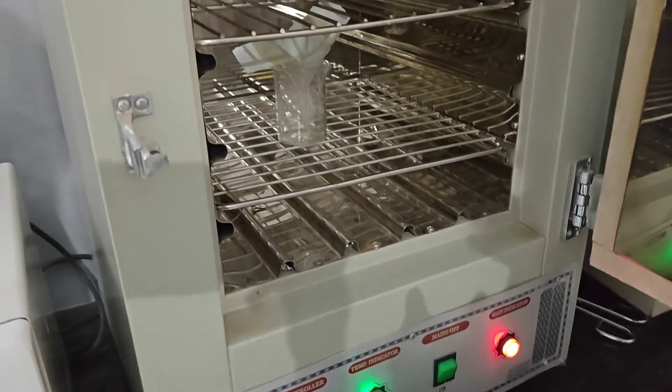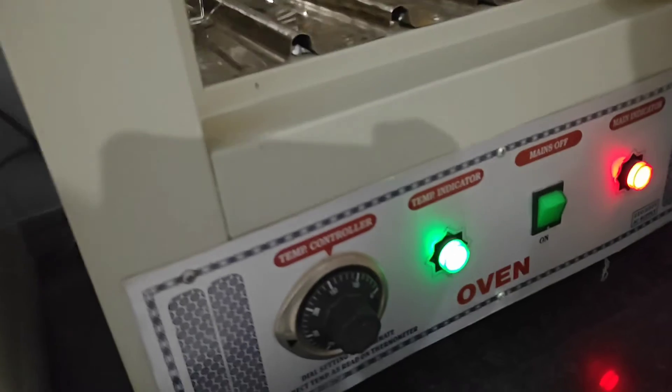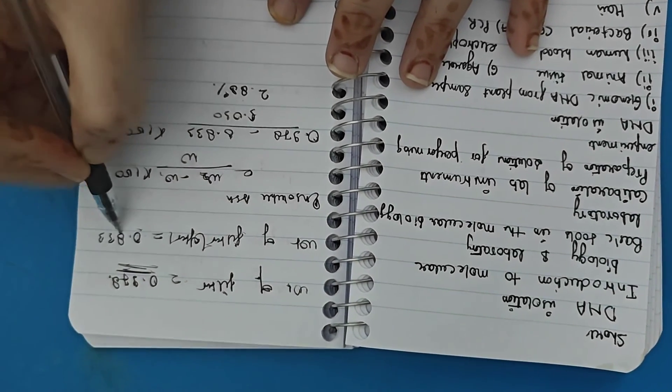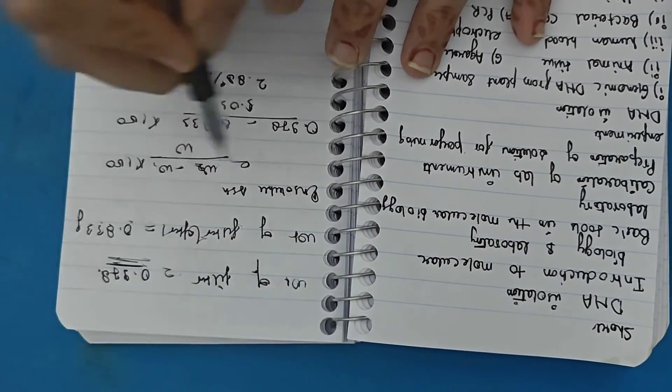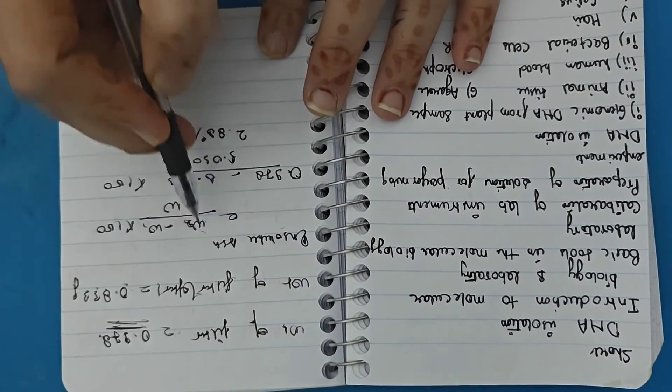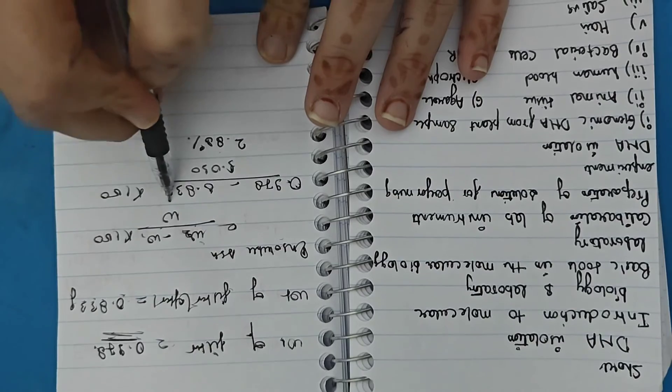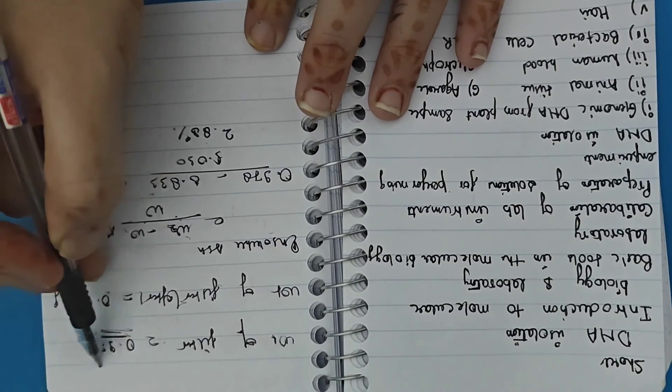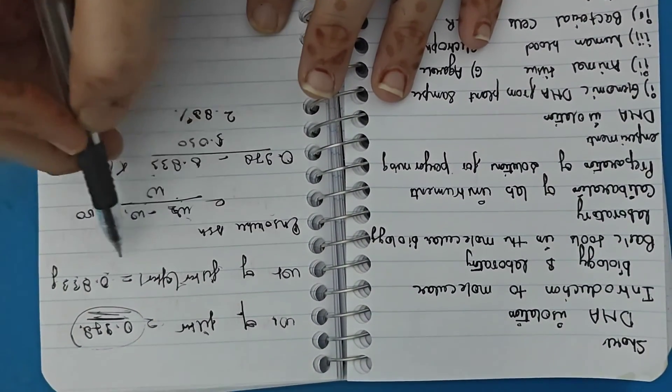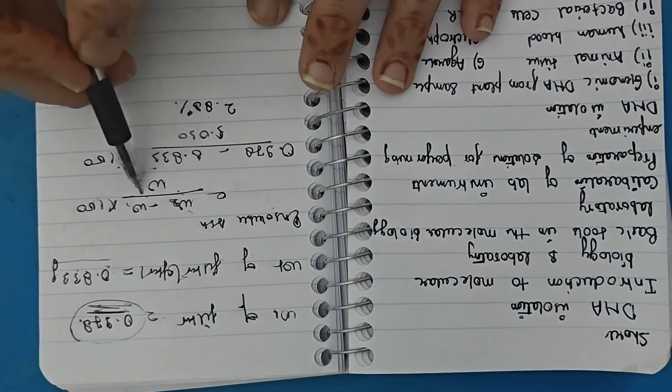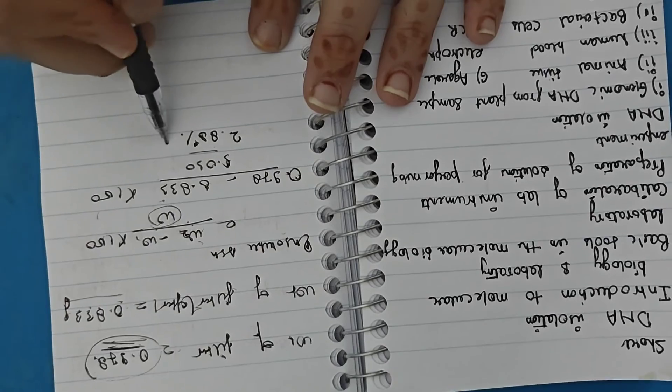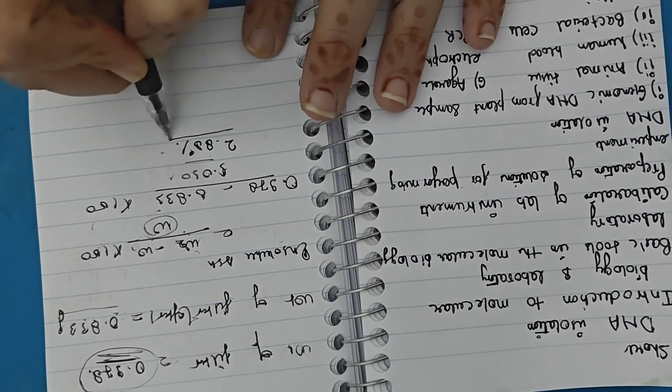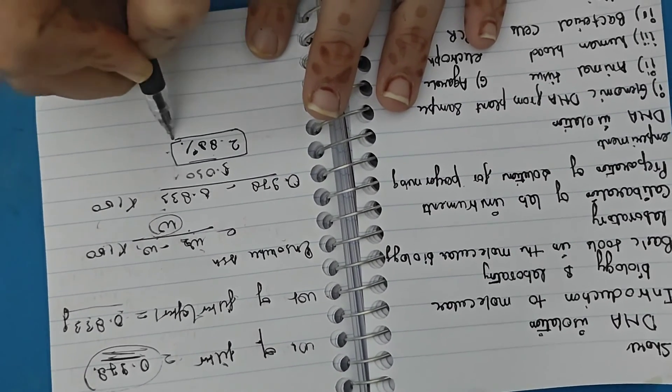Here the filter paper is dry and only the ash content is remaining. After drying, the weight of the filter paper is 0.833 grams. Now put the values in the formula that is W2 minus W1 divided by W multiplied by 100, where W2 is the weight of the filter paper before drying and W1 is the weight of the filter paper after drying and W is the weight of the sample. Now put all the values in the formula and you get the total insoluble ash that is 2.88%.